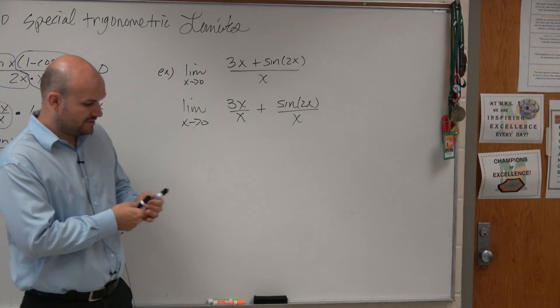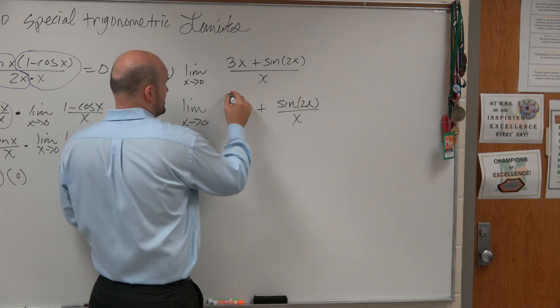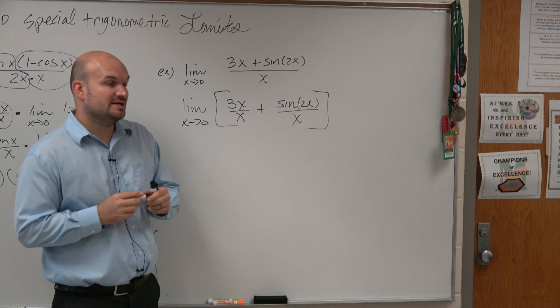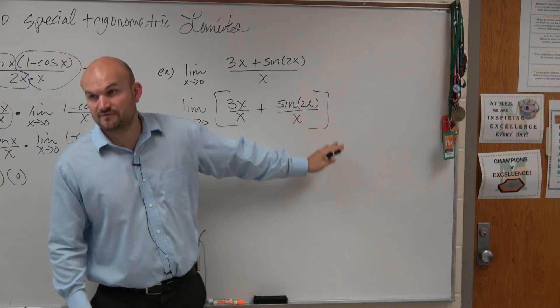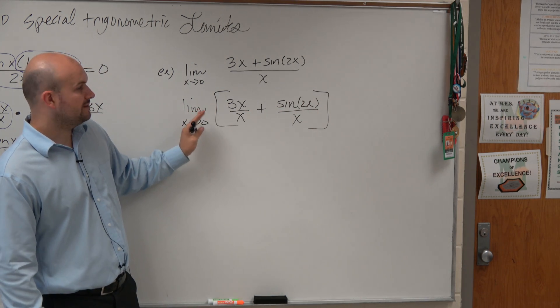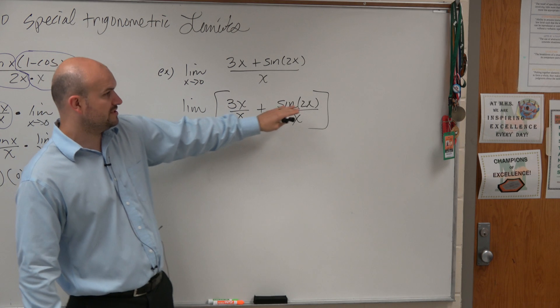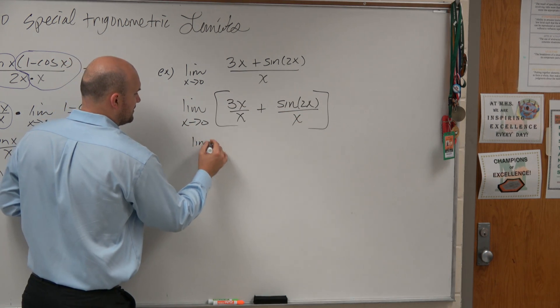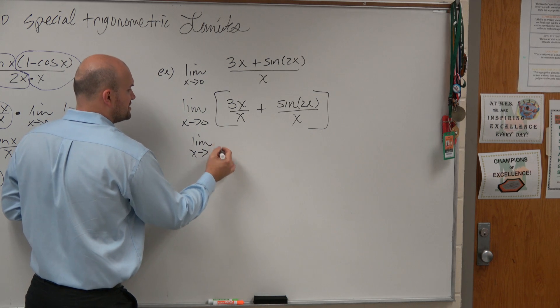Now, basically what you can do, there's another limit property here, so I rewrote this expression. Now what you can do is you can actually take the limit of both of these. So rather than breaking up, now you can take the limit of this expression and the limit of that expression. Obviously, guys, the x's divide out, so you're left with the limit as x approaches 3.